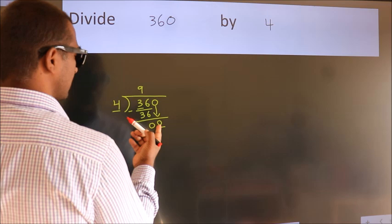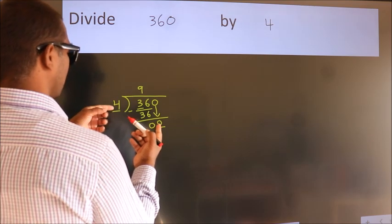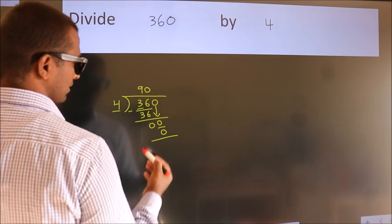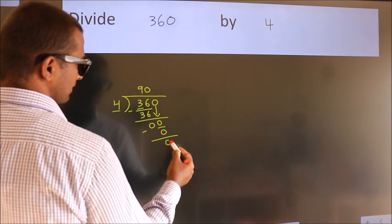When do we get 0? In the 4 table. 4 times 0, 0. Now we subtract. We get 0.